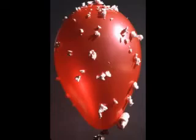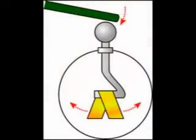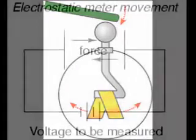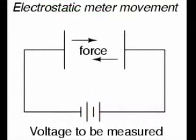If a voltage is applied between two conductive surfaces across an air gap, there will be a physical force attracting or repelling the two surfaces together, capable of moving some kind of indicating mechanism. That physical force is directly proportional to the voltage applied between the plates,